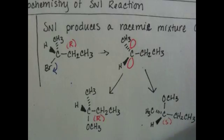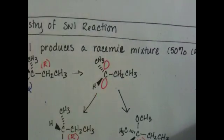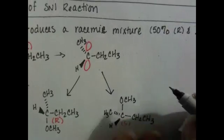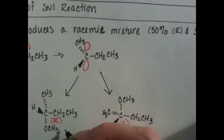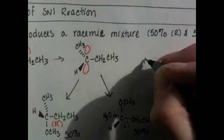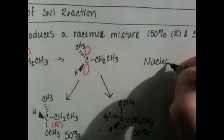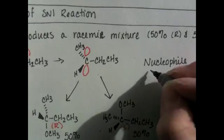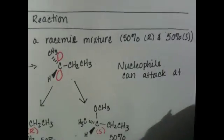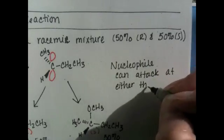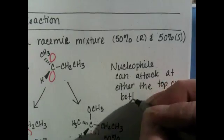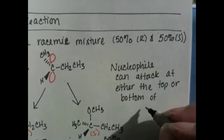Because of the way the carbocation is situated with empty lobes above and below the plane of the molecule, both equally likely to be attacked by the nucleophile, you get a perfect 50-50 mixture of R and S. The nucleophile can attack at either the top or bottom of the carbocation.